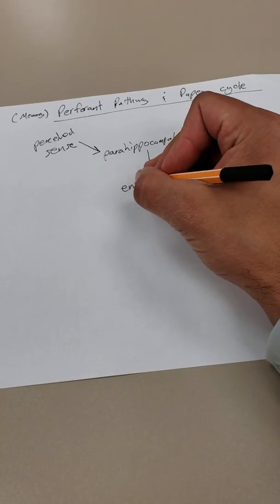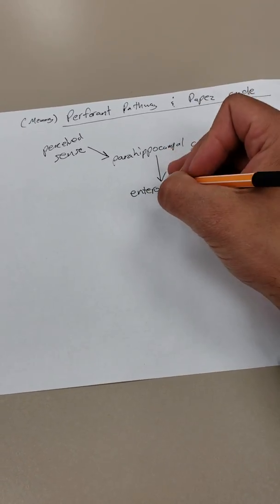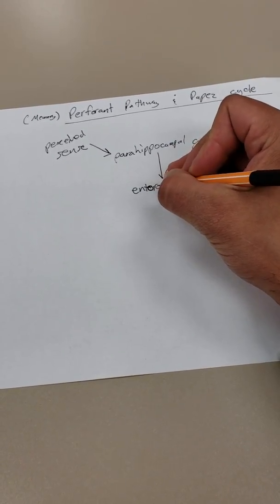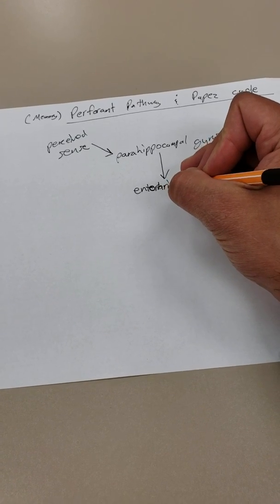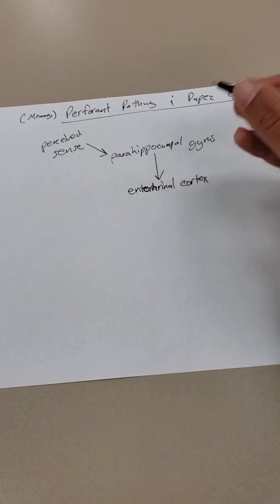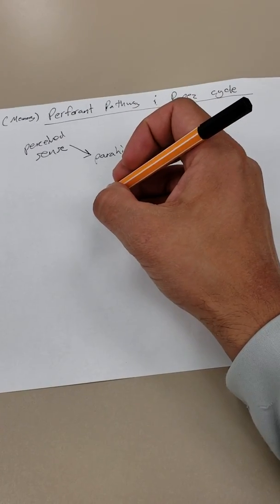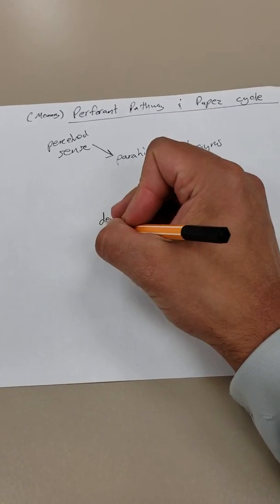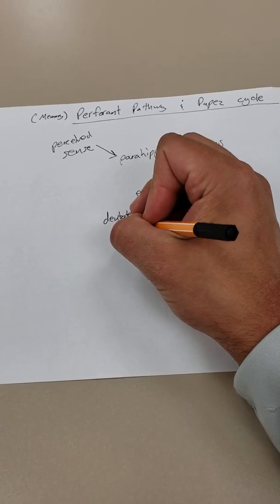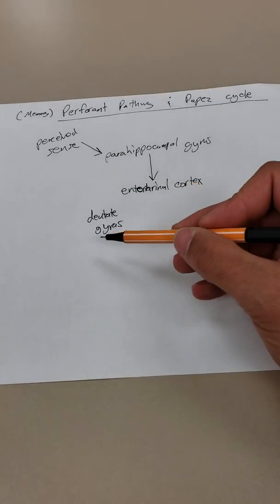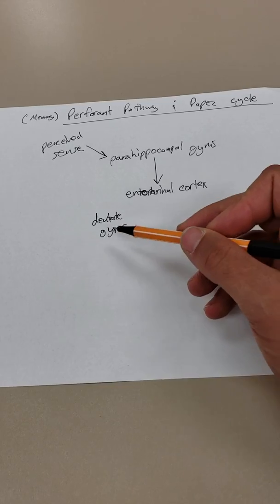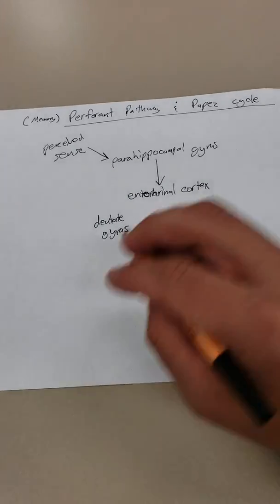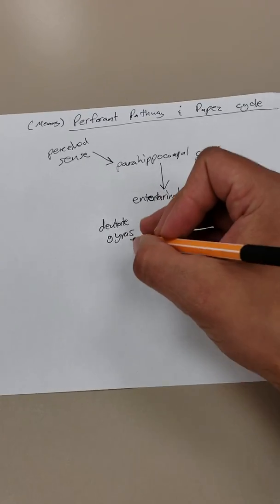So, the first area that this new input comes to is the entorhinal cortex. The entorhinal cortex is then going to send projections next to my dentate gyrus of my hippocampus. Dentate, meaning teeth, these are actually somewhat visible in cross-section. You can see little grooved marks.